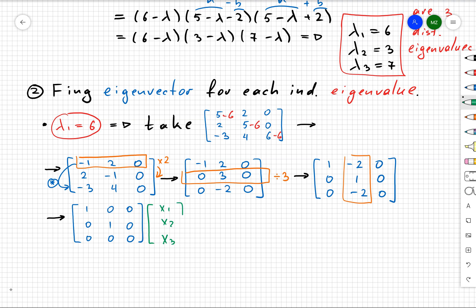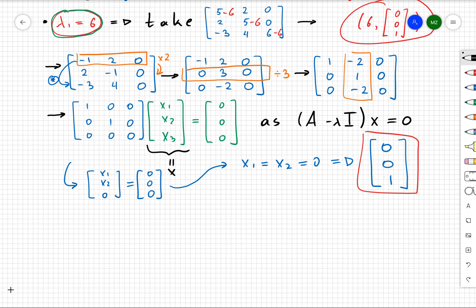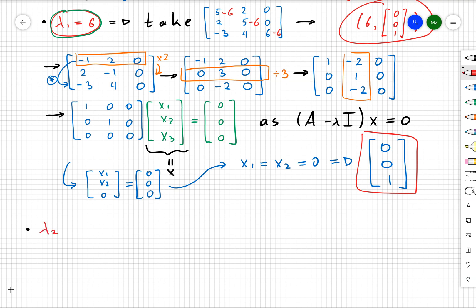You can see that I'm going to obtain in the end the following matrix. If I want to say that some vector is an eigenvector, then I want to have (A - λI)x = 0. From there, you can see that I will obtain a vector on the left-hand side, which is [x₁, x₂, 0]. From that, I will get that x₁ = x₂ = 0. So my eigenvalue and eigenvector is 6 and [0, 0, 1].